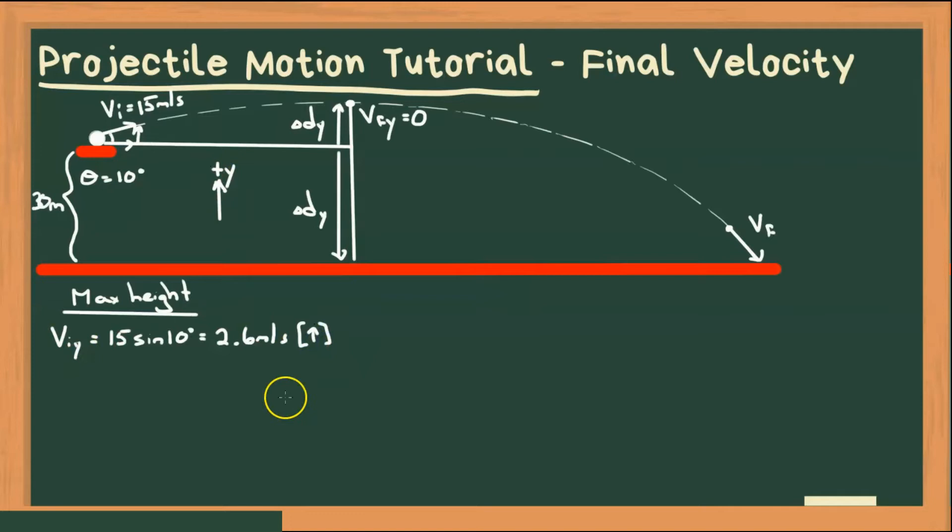Now what else do we know in our y component? We know that the acceleration y, since up is positive, this is going to be negative 9.8 meters per second squared. And then if we use our final velocity as zero, then we're choosing this point here at the maximum height, or the peak of our parabola. So then we need to solve for that displacement, this displacement here.